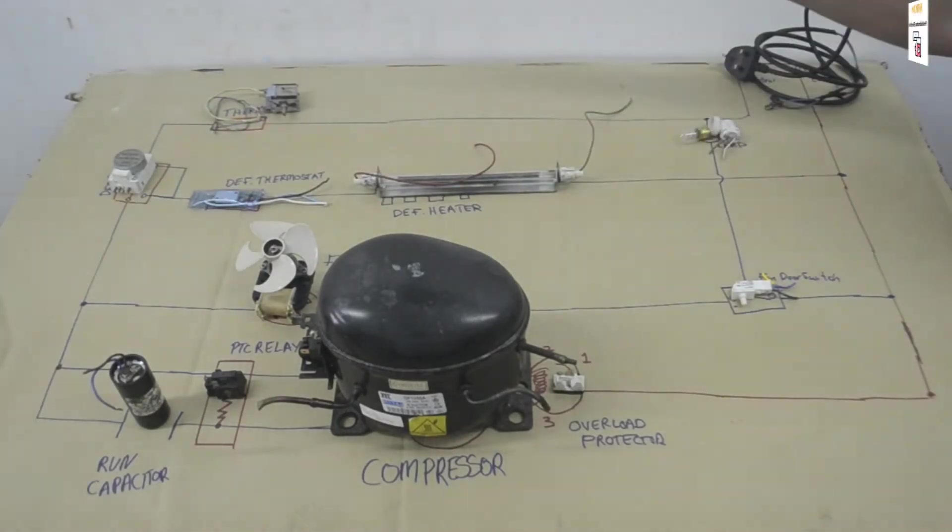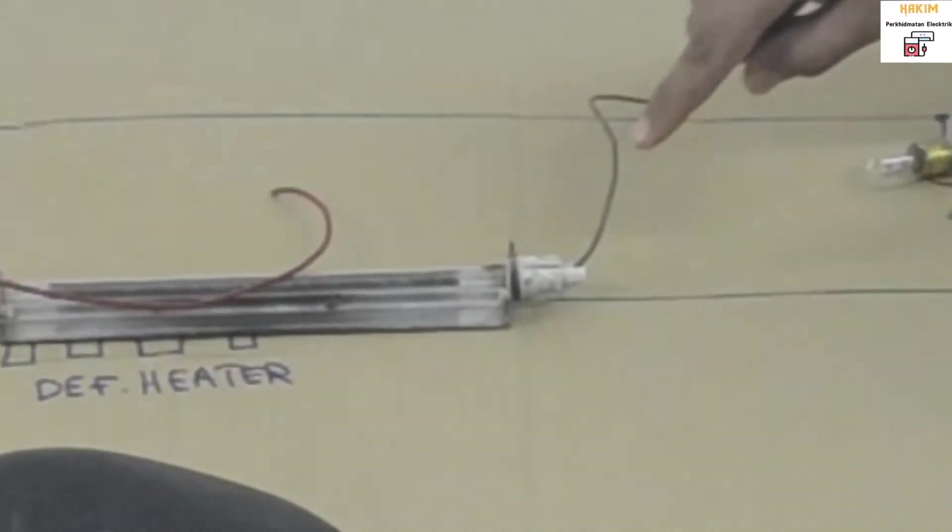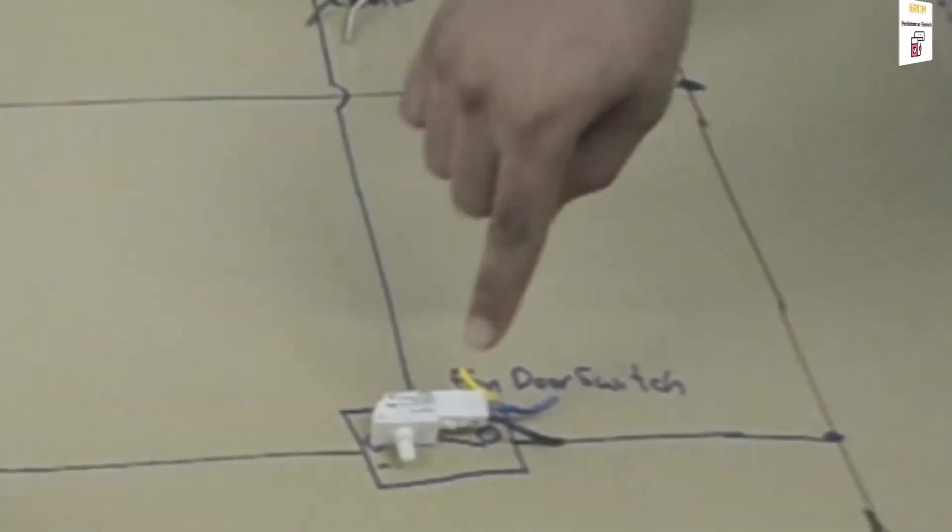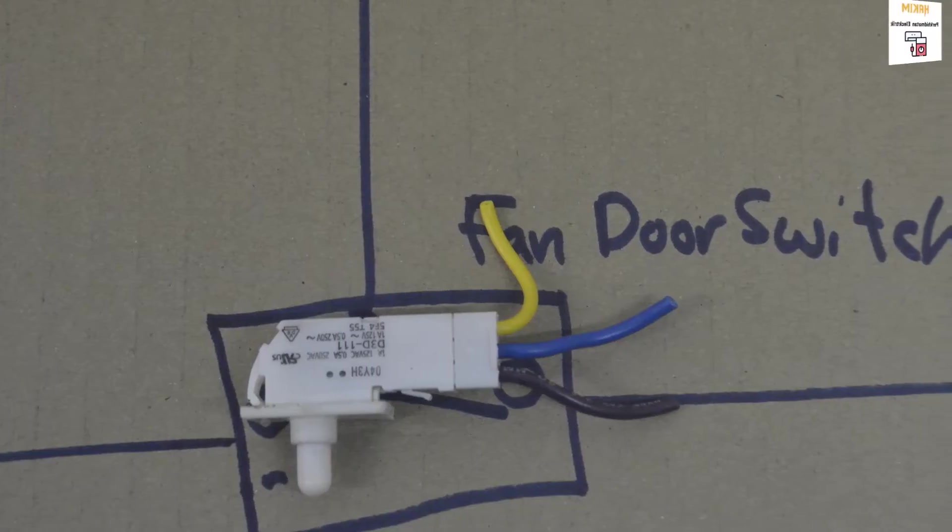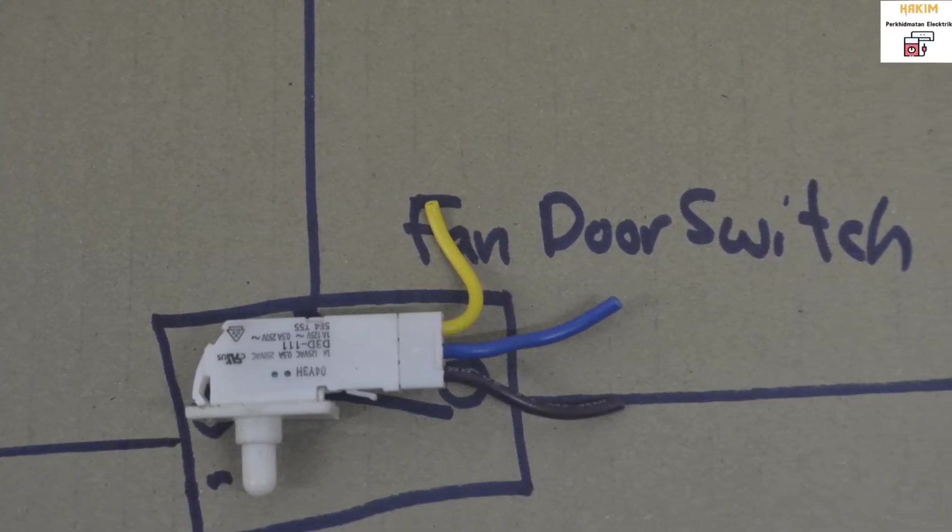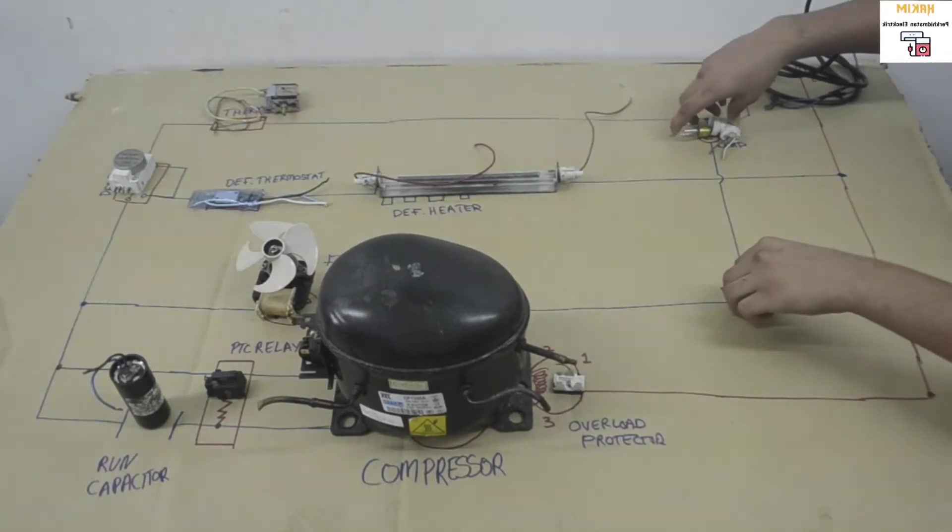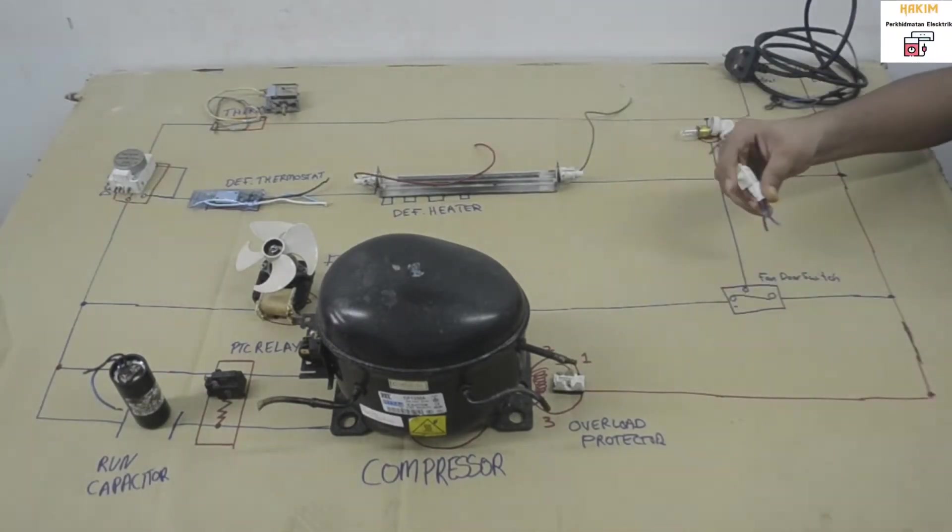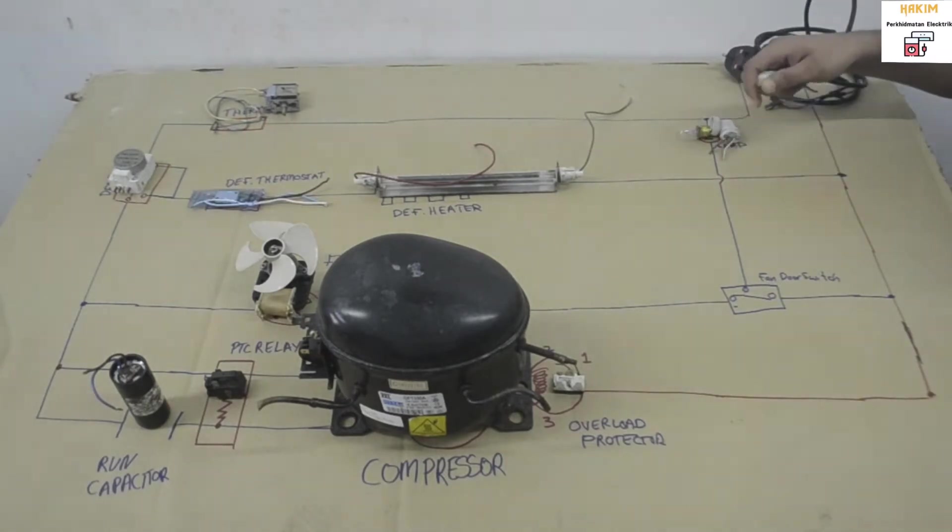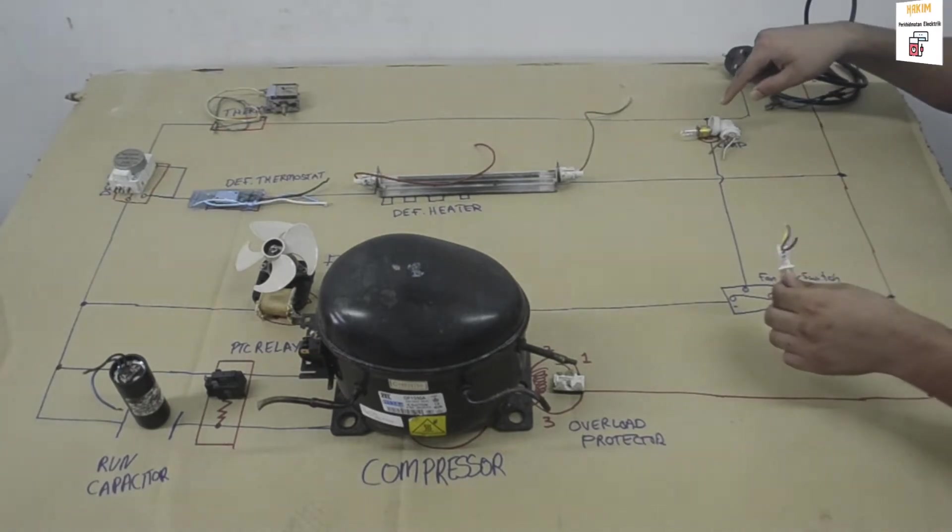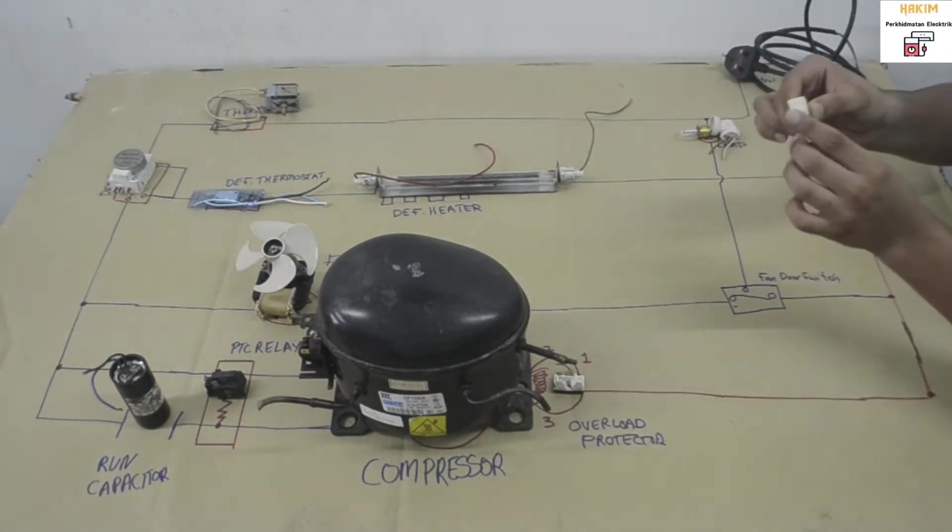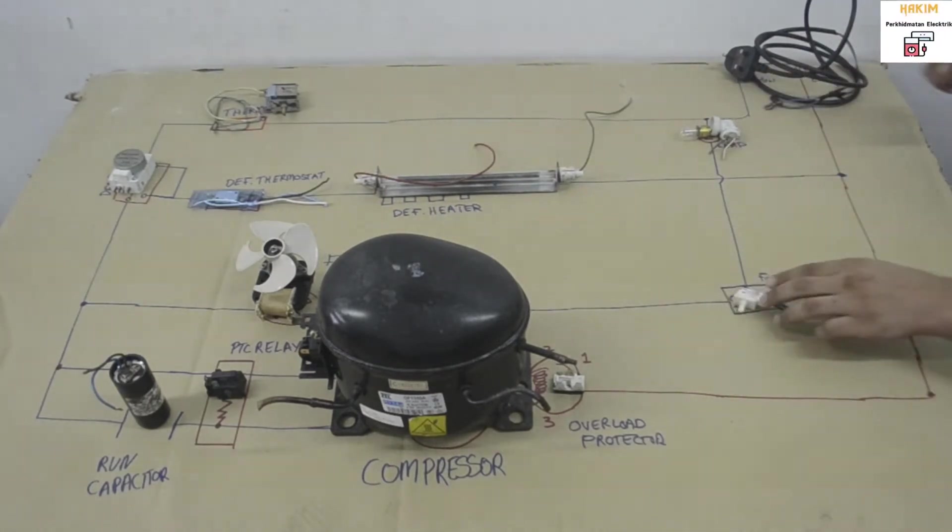Then from this we come here and we have the fan door switch. This is usually connected to the lamp. You know the lamp does not run 24 hours. When you open the door, it's the only time the lamp turns on. So this is what tells the lamp to turn on or off. It's called the fan door switch.